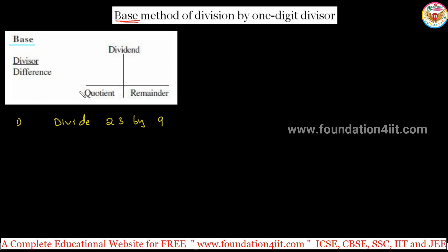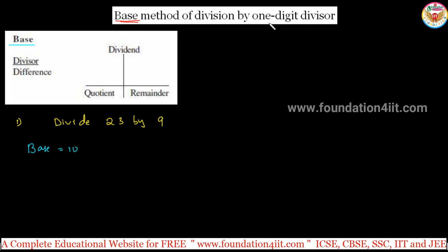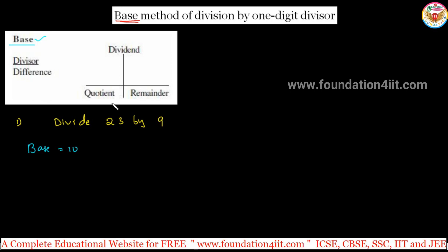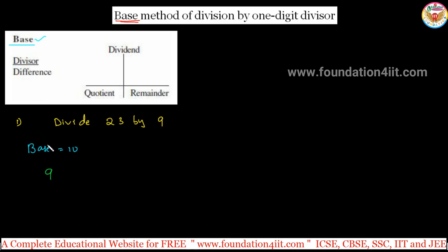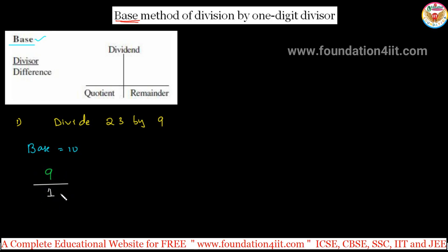We need to divide 23 by 9. The base is 10 because 9 is close to 10, which is 10 to the power 1. This is a base-10 problem because all one-digit divisors use base 10. The divisor is 9. The difference between the base and the divisor: 10 minus 9 is 1. So the difference is 1. This is calculated in mind; we write the number 1.